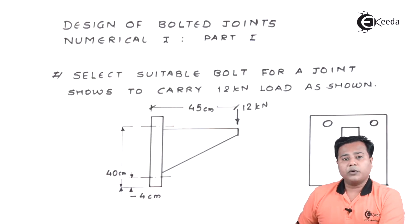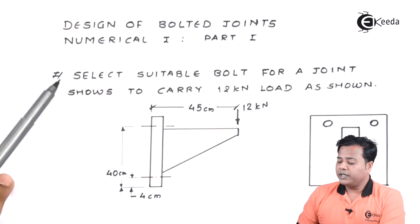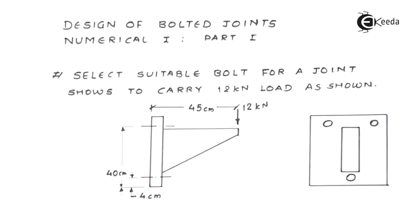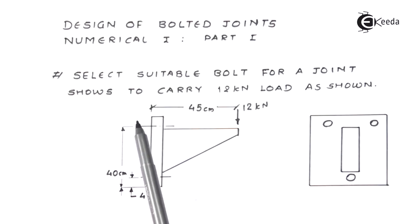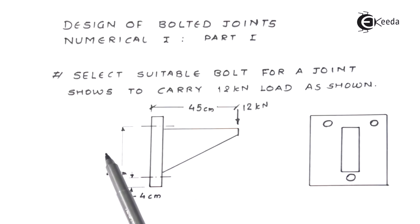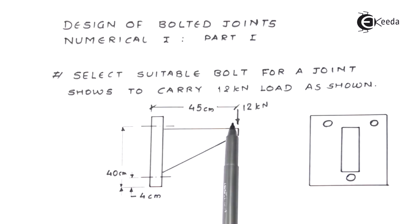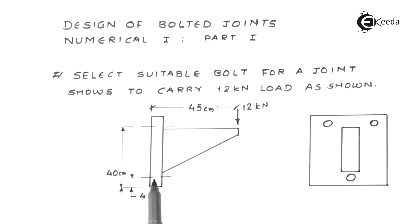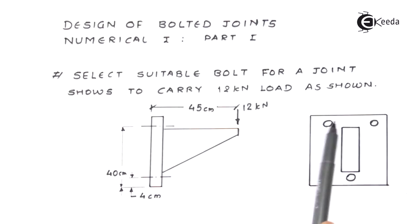As you can see on the screen, the problem statement is given: select a suitable bolt for the joint shown to carry 12 kilonewton load. This is the important diagram where you have to locate the given number of bolts. The load acting is 12 kilonewton, the eccentricity is given as 45 centimeter. The bottom most bolt is at 40 centimeter and the top most are at 4 centimeter — that is how the locations are given.